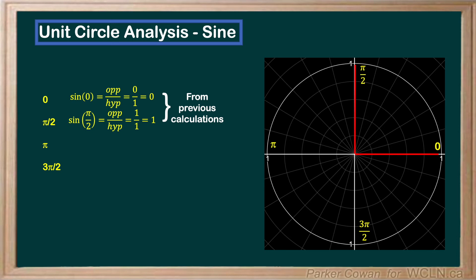Notice that pi is exactly opposite 0 on this unit circle, and 3 pi over 2 is opposite pi over 2. Let's think about our squished triangle again. For the case of sine of pi, this gives us a value of 0 for our opposite side, meaning sine of pi is also 0.